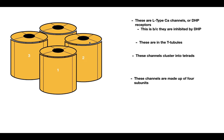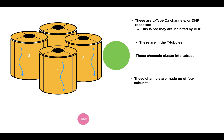Each of these channels is made up of four subunits. In order to open, you have to have depolarization. When depolarization comes in, it causes a conformational change in each of these channels, which causes the pores to open. When the pores open, it allows calcium to flow through the pore into the cytosol. That is the DHP receptor.